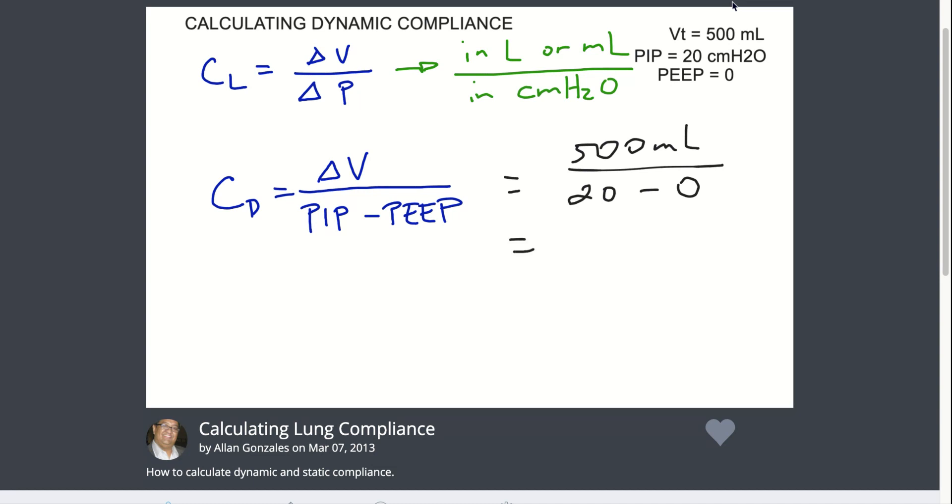So basically, 500 over 20 is equal to 25 mLs per centimeters of water pressure. This is basically the dynamic compliance.